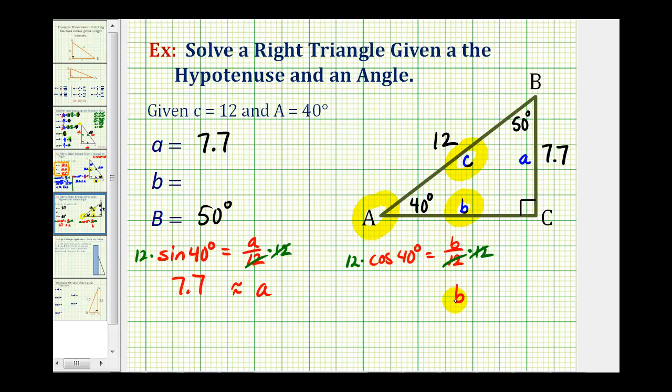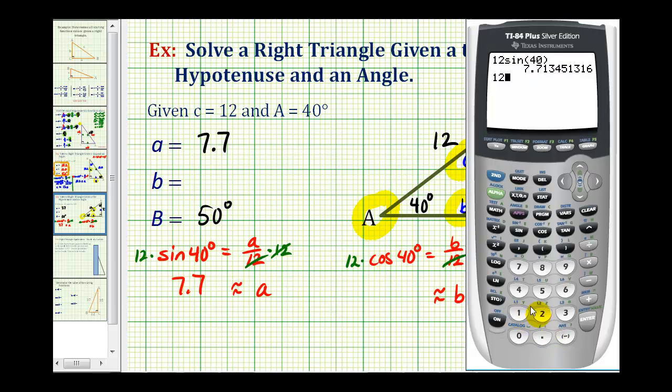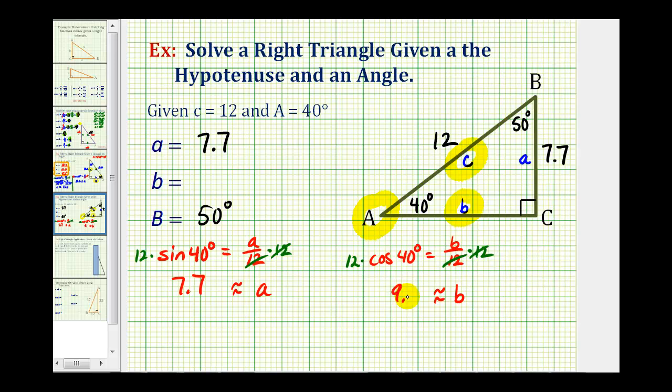The length of side B is equal to this product here, which we'll approximate on the calculator. So now we have 12 times cosine 40 degrees. The length of side B is approximately 9.2 units. And now we have all the information we're asked to find.